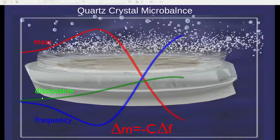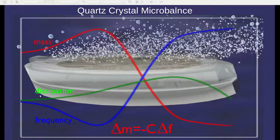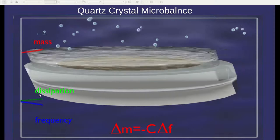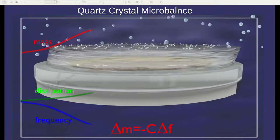A QCM also can measure what is called dissipation, which is a measure of how squishy or flexible the polymer film is.